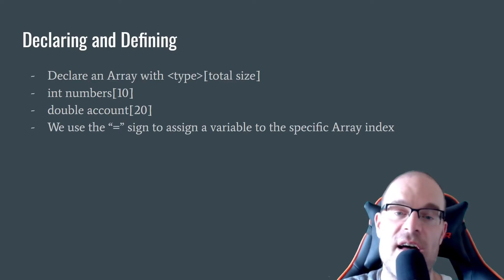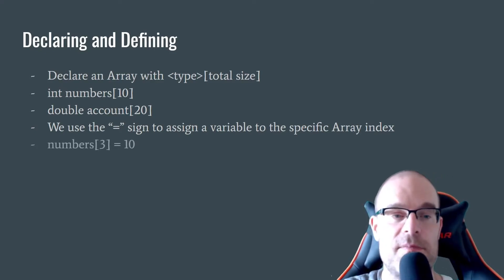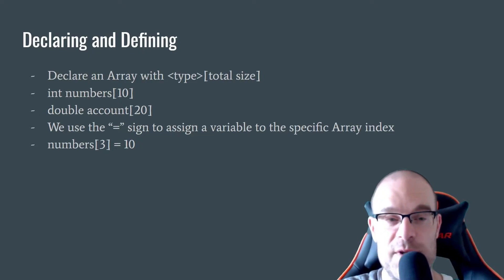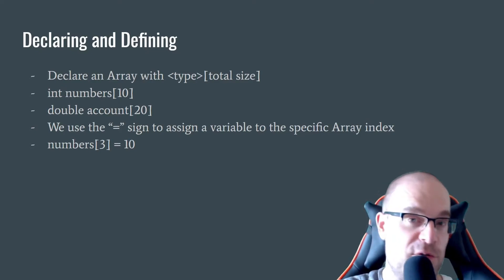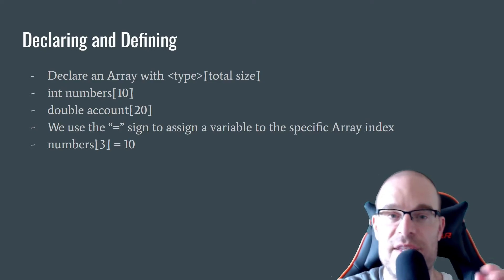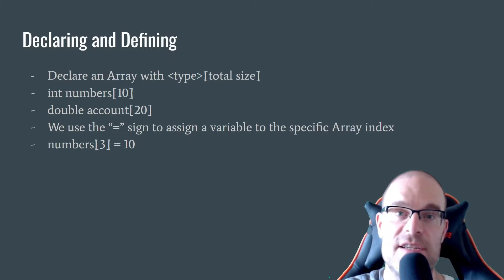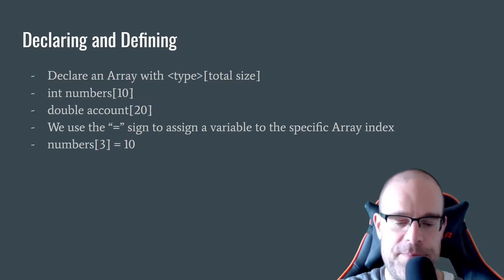We then use the equal sign to assign a value to a specific array index. For example, numbers with an index of 3 — we want to assign it 10. Don't forget that C++ works in a zero-based fashion on index, so when we say numbers[3], that's actually the fourth position, the fourth item in that numbers array.